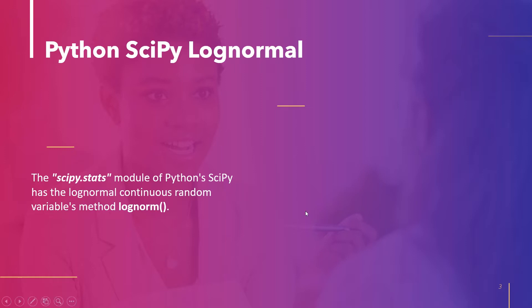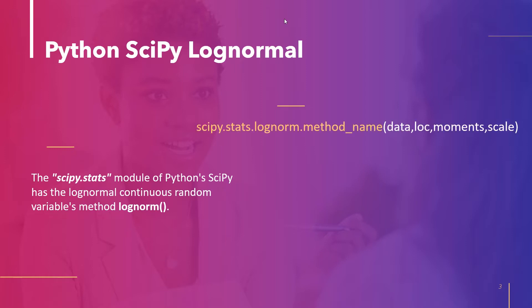The syntax of the method is: scipy.stats.lognorm.method_name, where the method name can be any method like rvs, cdf, or pdf. Its parameters are: data — a collection of values or points that reflect uniformly sampled data as an array; loc — used to provide the mean with a default value of 0; moments — used to compute statistics like mean, kurtosis, and standard deviation; and scale — used to indicate the standard deviation, set to 1 by default.